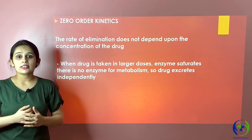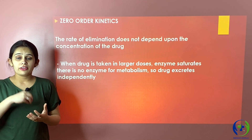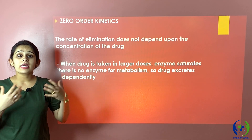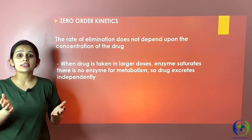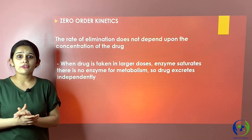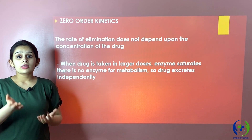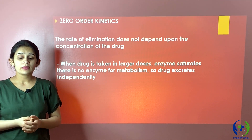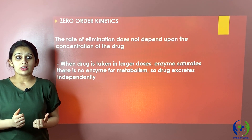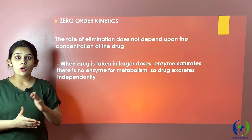Zero order kinetics occurs when the drug is given in large doses, such as in cases of poisoning. When the drug concentration is very high, the enzymes required for its metabolism become saturated, and a fixed amount gets eliminated on its own without following a proportional order. The elimination does not depend upon the concentration of the drug. For example, if 1000 mg is given, 200 mg is eliminated, leaving 800 mg; then another 200 mg is eliminated — the amount is constant, not the fraction.